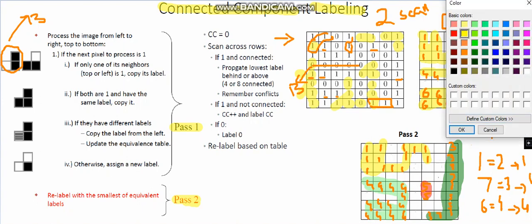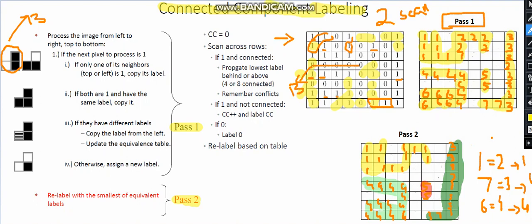That's how my connected component algorithm works using the two scan algorithm, processing row by row based upon a few assumptions and based upon my algorithm. That's all about the two scan algorithm.